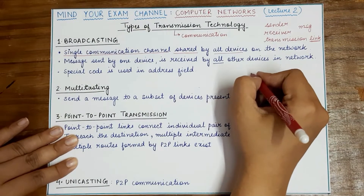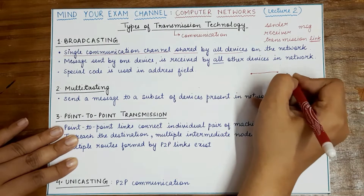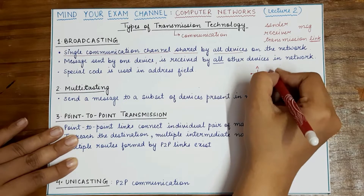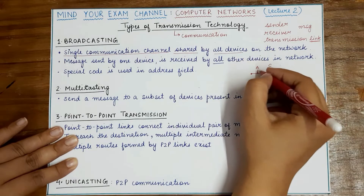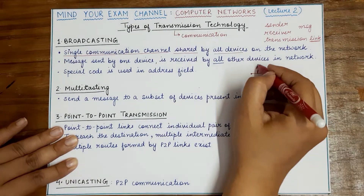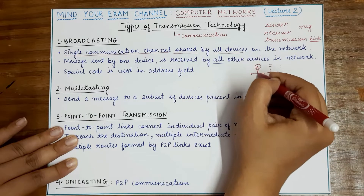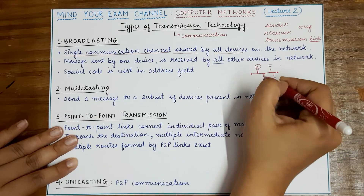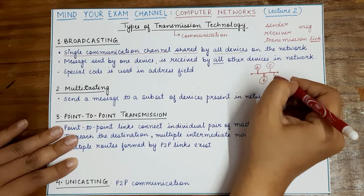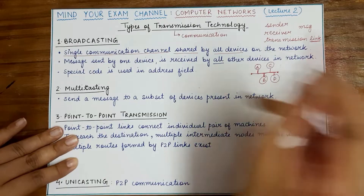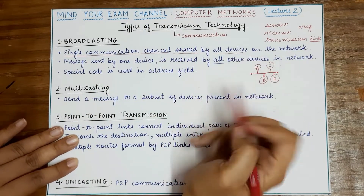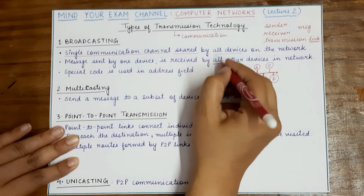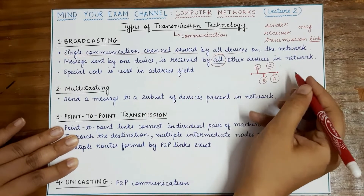You can imagine broadcasting like this: there is a single communication channel connecting multiple devices — say A, B, C, and D. If a message is sent by device A on this network via this communication media, then since the channel is shared, the message sent by A will be received by B, C, and D. The message sent by one device is received by all devices present in the network.